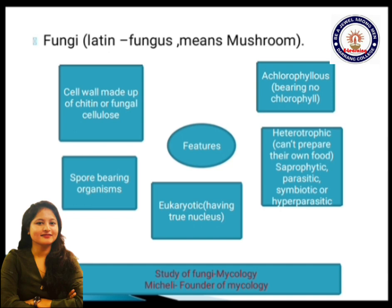The second most important thing is that they are achlorophyllous in nature, meaning they do not bear chlorophyll. Organisms which do not have chlorophyll cannot prepare their own food. Thus the third characteristic is that they are heterotrophs. In heterotrophs, fungi are grouped under saprophytic, parasitic, symbiotic, and hyperparasitic.